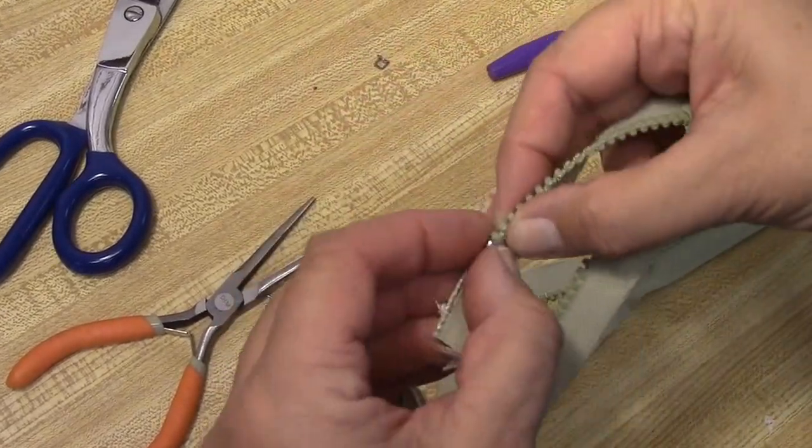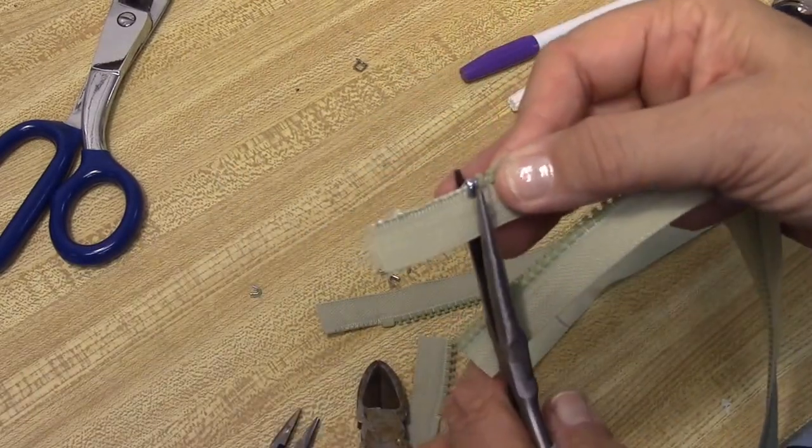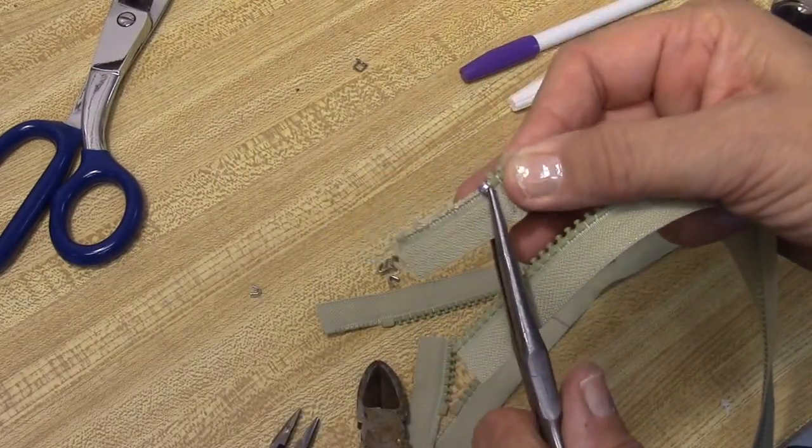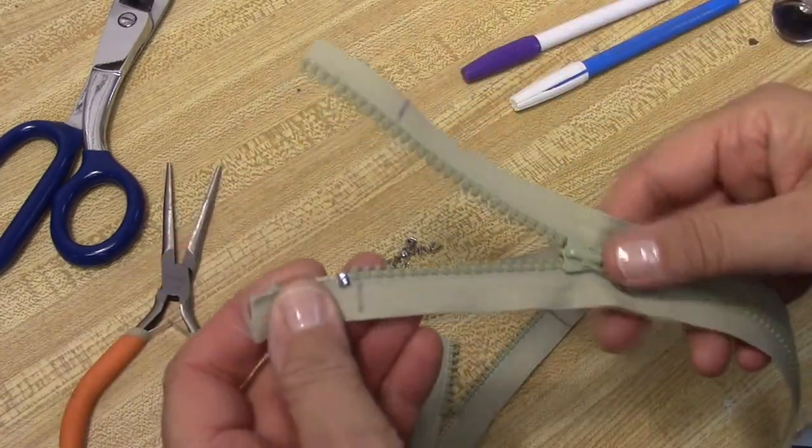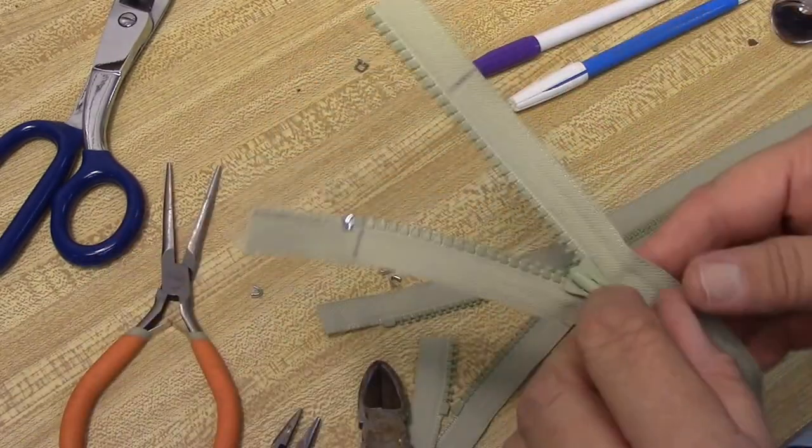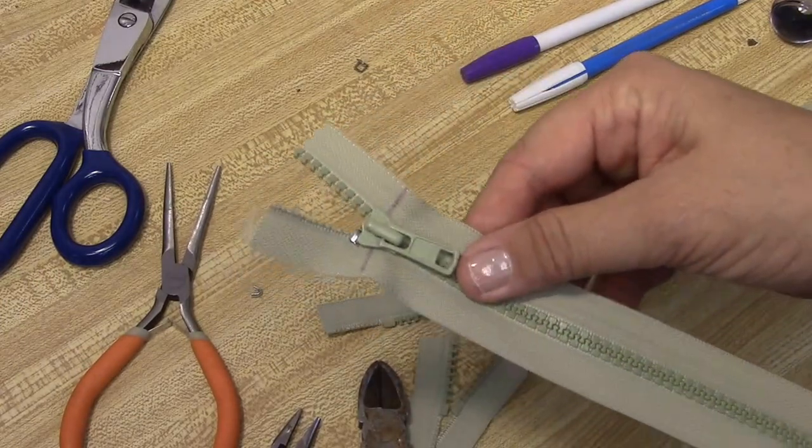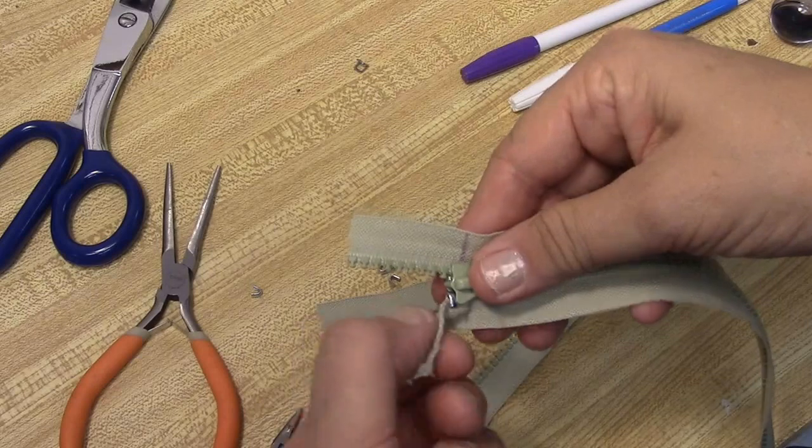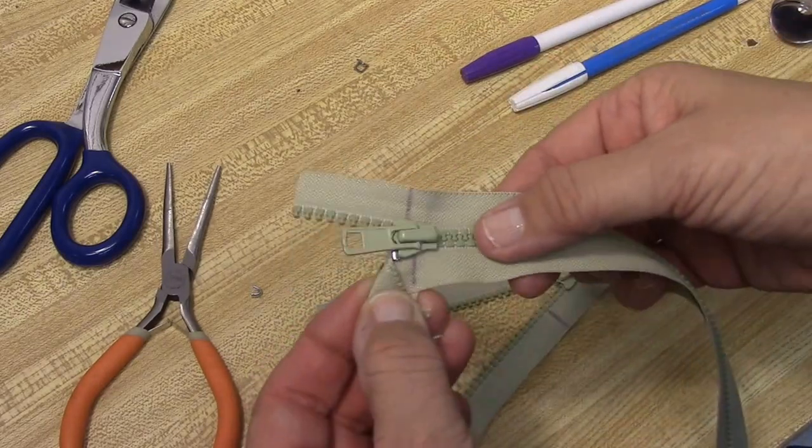Then if you're going to use the little U top stop, you put it right there and then using either of your pliers, you clamp it on. That's all you do. And the top stop, then you have to put one on the other side, of course. The only thing the top stop really does is it keeps your pull from coming off the top of your jacket. Then this bit gets tucked in and sewn into the seam of your jacket.